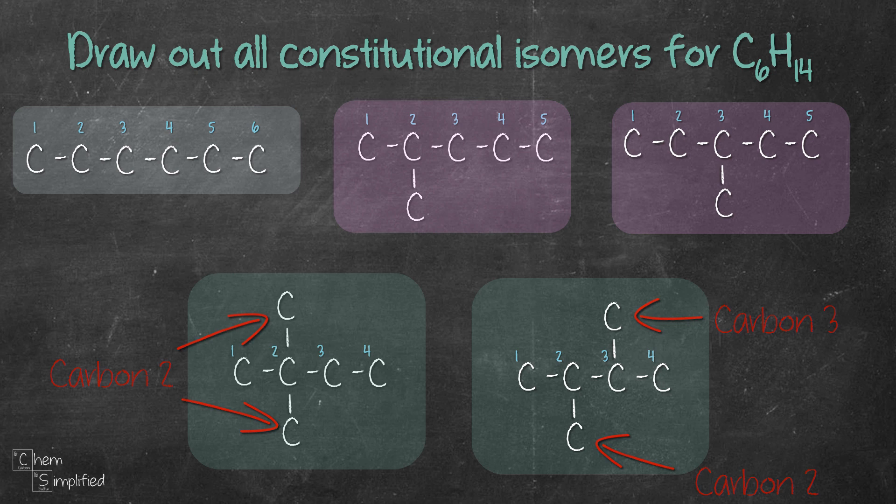Is there any other way we can place the carbon? The 2 remaining carbon in a 4 carbon chain? Looks like no. If we stick the extra carbon at the end, it will just lengthen the chain, making it a 5 carbon chain.